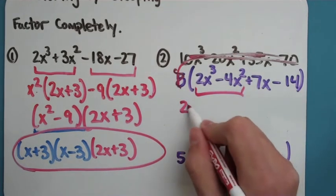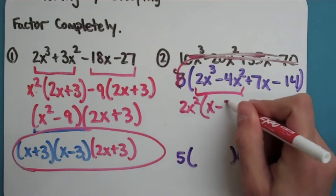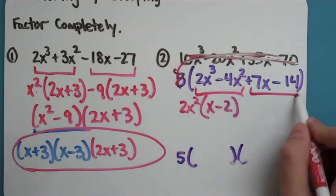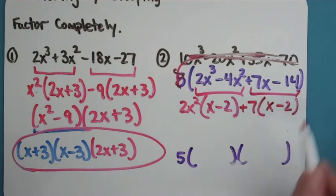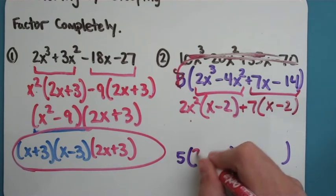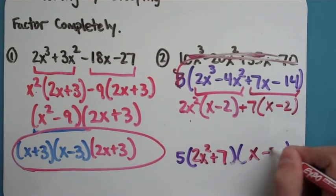You're going to look at these. We can take out 2x squared on this guy. We will end up with x minus 2. And this guy you can take out a positive 7, and we'll get an x minus 2. So my actual answer here is 2x squared plus 7 times x minus 2.